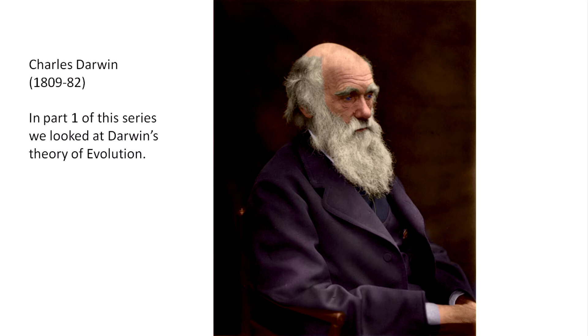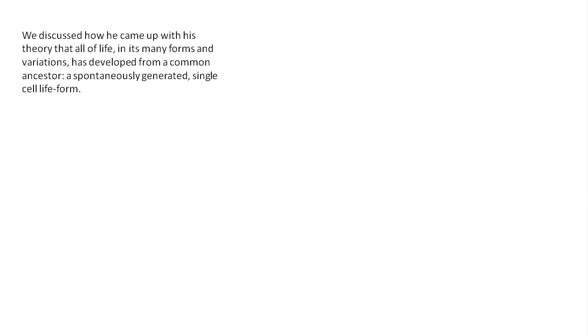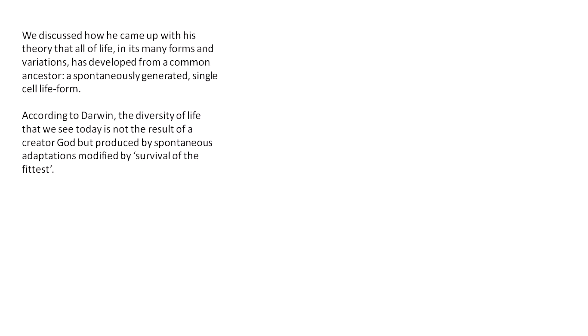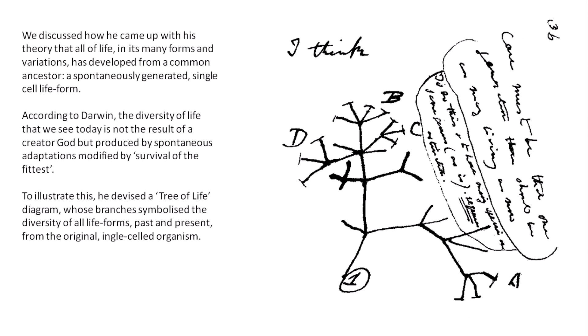Charles Darwin was a Victorian gentleman who lived between 1809 and 1882. In part one of the series we looked at Darwin's theory of evolution and discussed how he came up with the idea that all of life, in its many forms and variations, has developed from a common ancestor — a spontaneously generated single-cell life form. According to Darwin, the diversity of life is not the result of a Creator God but produced by spontaneous adaptations modified by survival of the fittest.